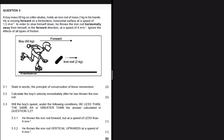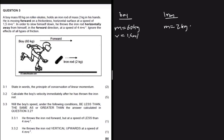A boy of mass 60 kg on roller skates holds an iron rod of mass 2 kg in his hands. He is moving forward on a frictionless horizontal surface at a speed of 1.5 meters per second. Because the boy is holding the rod, the rod also has a velocity of 1.5 meters per second.